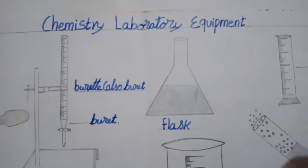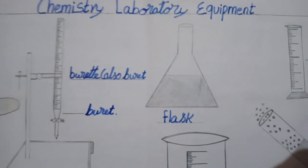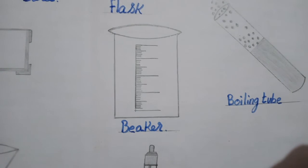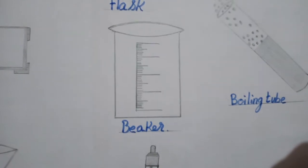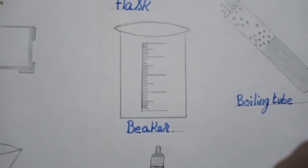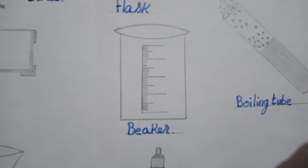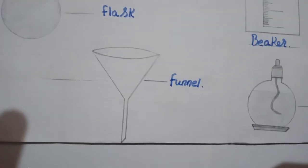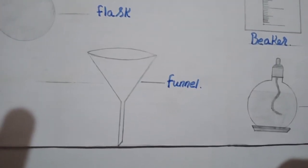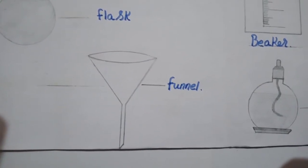Next one is a flask — this flask is a normal flask and it is used to heat with chemicals. Next one is a beaker. This beaker is used to measure the amount of chemical with salt and to heat it.